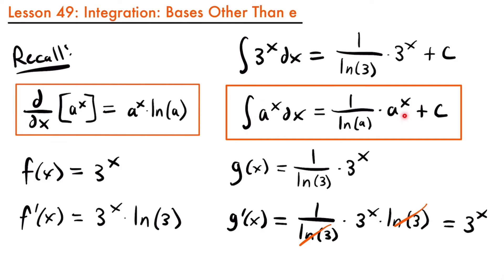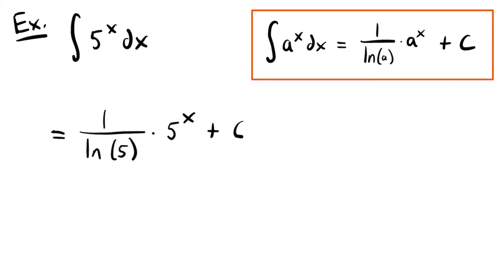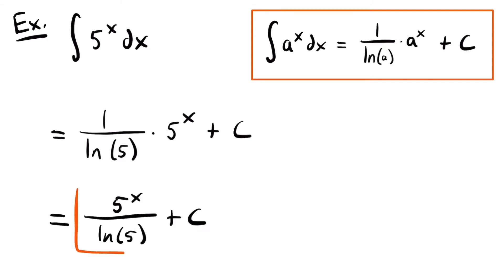Now that we have our integration rule, let's look at some examples. Here we have the integral of 5 to the power of x dx. In order to integrate this function, we use that rule we just derived. For this integral, a is equal to 5, so this is equal to 1 divided by the natural log of 5 times 5 to the power of x plus c. We can simplify this to 5 to the power of x divided by the natural log of 5 plus c — the antiderivative of this function.